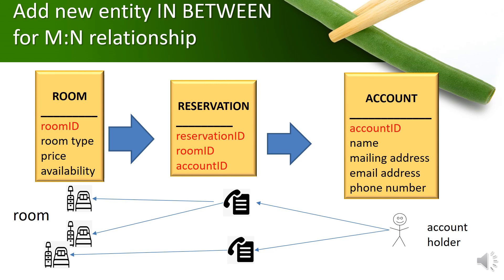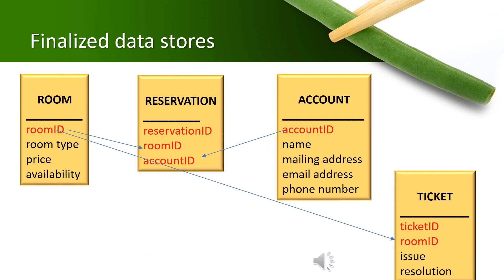By inserting another entity that we name as reservation, one account holder can create many reservations, and in one reservation, he or she can reserve many rooms. So the finalized data stores are room, reservation, account, and ticket.